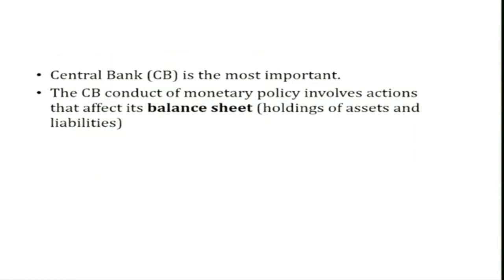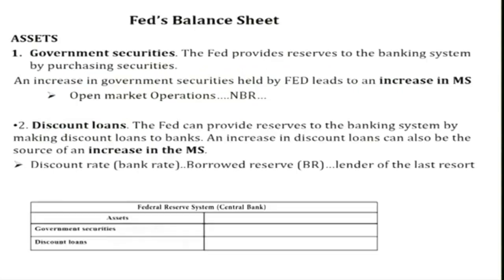We will now focus on the central bank as the key player in the money supply process. Through its balance sheet — the liability and asset side — we will see how the central bank's conduct of monetary policy affects the money supply. When the central bank conducts monetary policy, it involves actions that affect its balance sheet, that is, its holdings of assets and liabilities. We will use a T-account to discuss how these changes affect both sides of the balance sheet.